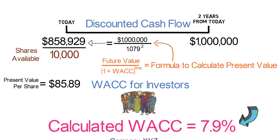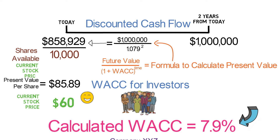If our expectations are correct about future cash flows, this is what the stock should be worth today. Let's pretend that the stock is trading at just $60 a share — well, it could be undervalued and we can consider buying it. But if instead the stock is trading at $100 a share, perhaps it is overvalued and we should find a different opportunity for our hard earned money.